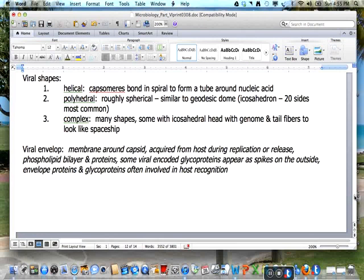The viral envelope is a membrane around the capsid which is acquired from the host during replication or release. It consists of a phospholipid bilayer and proteins.